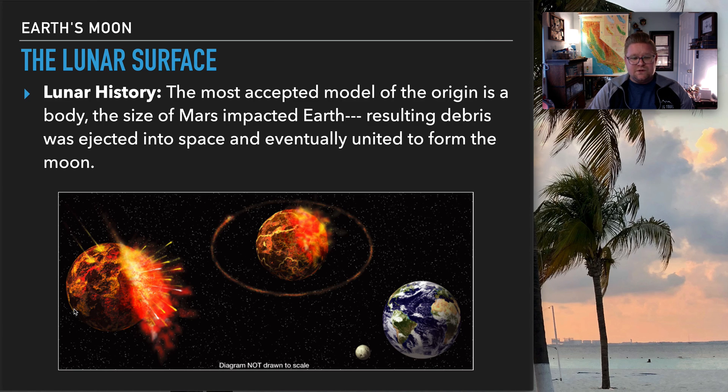And moving back to its origin, the lunar history, the most accepted model of the origin as a body, the size of Mars, impacted Earth, resulting in debris that was ejected into space and eventually cooled down and united to become part of our Moon. So this is the most widely accepted process.